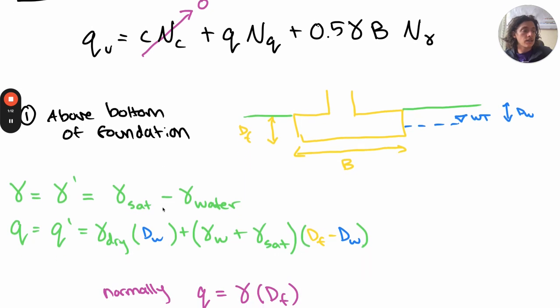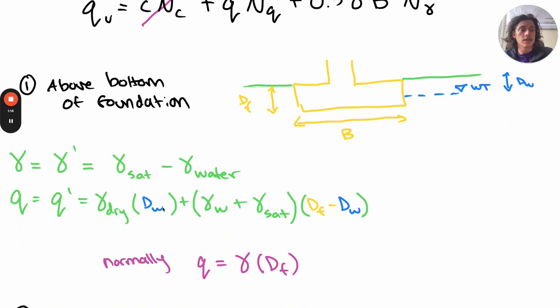Our first option is when the water table is above the foundation, above the bottom of foundation. This is the worst case scenario. In this case, two terms must be modified. A portion of the unit weight term gamma has to be taken as the effective unit weight, which is the saturated unit weight minus the unit weight of water. Think that the water is creating some buoyant pressure on the soil, reducing its weight and its consolidation.